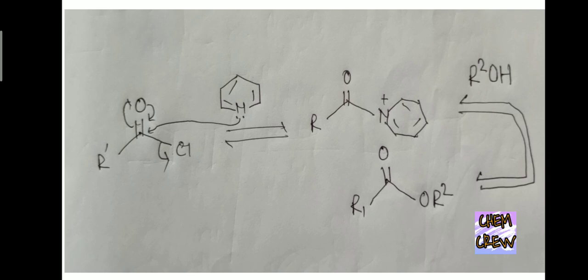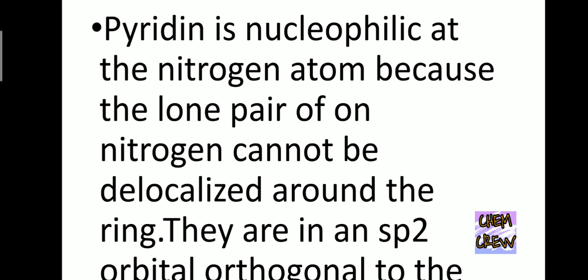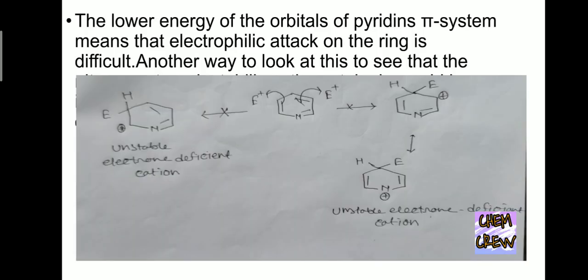Pyridine is nucleophilic at the nitrogen atom because the lone pair on nitrogen cannot be delocalized around the ring. They are in an sp2 orbital orthogonal to the pi system. The lower energy of the orbitals in the pyridine pi system means that electrophilic attack on the ring is difficult.